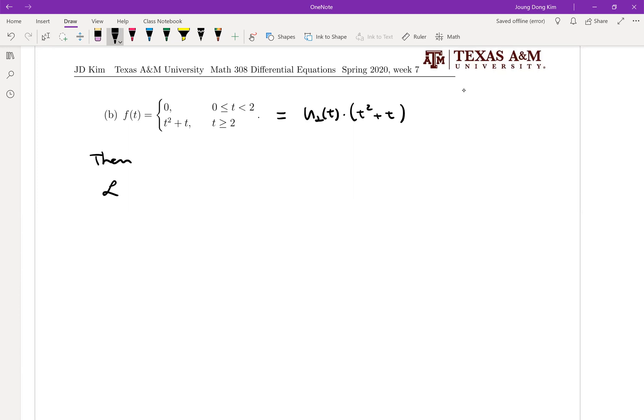Now, Laplace transform of f is equal to Laplace transform of u2t and t squared plus t. Like this, this is table number 13. So we know the form already.